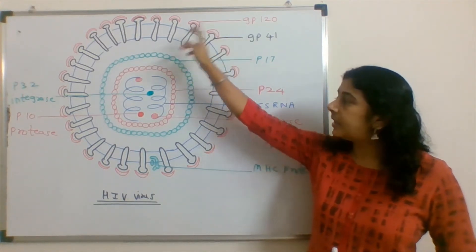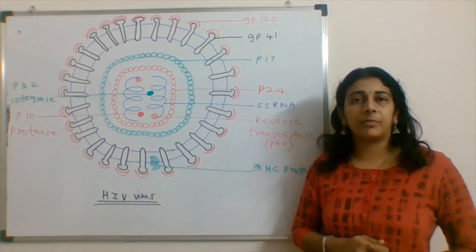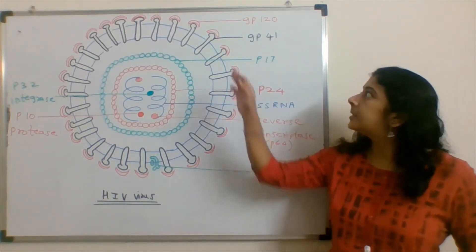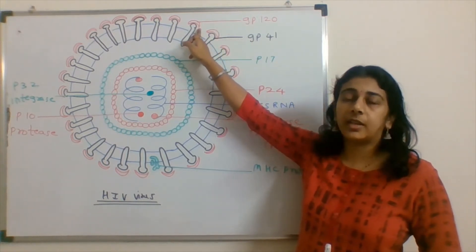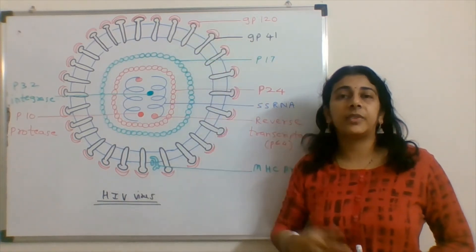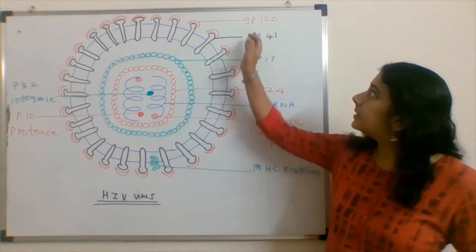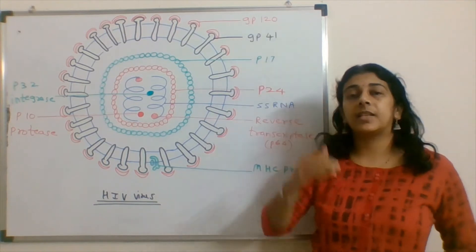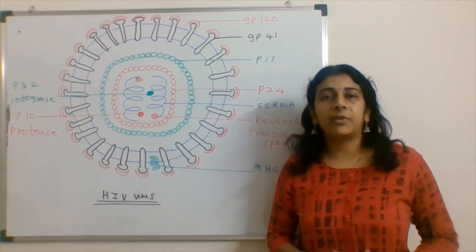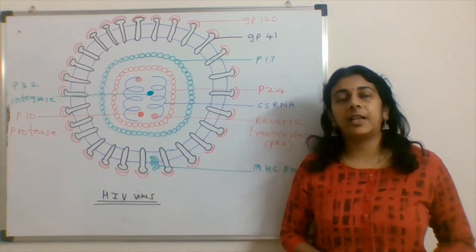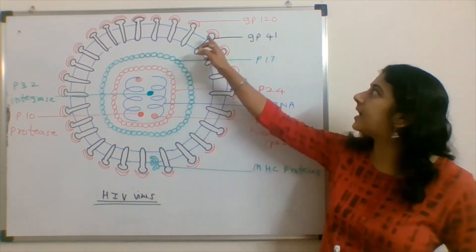So this GP120 is associated with GP41. There are a number of proteins present. Here GP120 in the infectious cycle serves as a viral receptor for CD4 on the host cell. CD4 molecules with interaction is there.